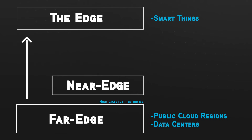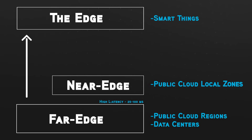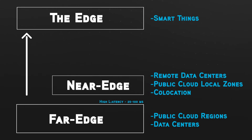The next type is called the near edge, which is closer to these edge devices — hence why it's called the near edge. This is where you'll find public cloud providers' local zones, where they're deploying in smaller areas to be closer to where that data is generated and to have reduced latency. This is where your remote offices and co-location can potentially exist. The near edge would have medium to low latency, roughly anywhere from 5 to 25 milliseconds round trip.